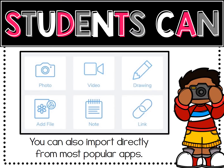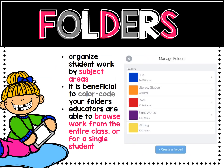You may be wondering what students can do within the Seesaw app. Here you see the features available: take a photo using the camera, record a video, create a drawing, insert or add a file — yes, Google Drive is available — and take notes which includes typing text or adding a link to a website. One of my favorite features is folders. You may organize folders in any way you wish, such as by subject or even standards. It's beneficial to color code folders for primary students who may not be able to read the folder headings.